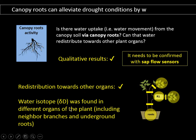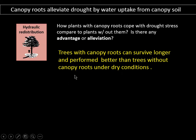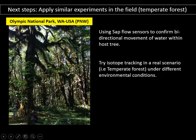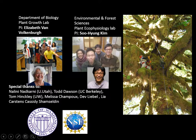In conclusion, there is redistribution towards other organs — isotope water was found in different parts of the tree. Trees with canopy roots performed better than trees without canopy roots under dry conditions, suggesting there is some alleviation of drought stress. The next step is to apply similar experiments at Olympic National Park with big-leaf maple trees, using sap flow sensors to confirm bidirectional or reverse flow, and using heavy water to track the movement of water through the canopy roots. I want to thank my two labs — my advisors and the University of Washington and NSF, which is supporting this project.